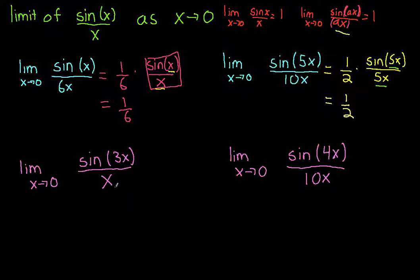Going to the next problem, this one's trickier. You can't take anything out of the inside of a sine function, so we need to do something at the bottom. The bottom is x and we need 3x to match the top. I'm going to multiply both the top and bottom by 3.